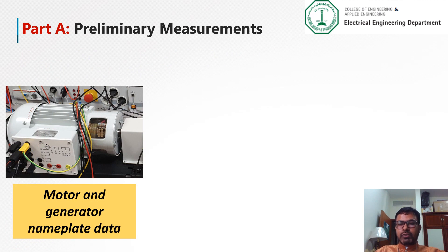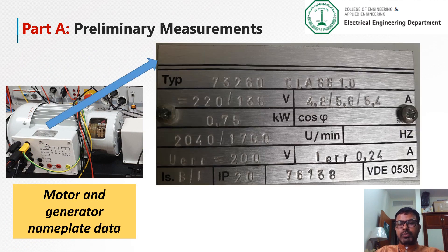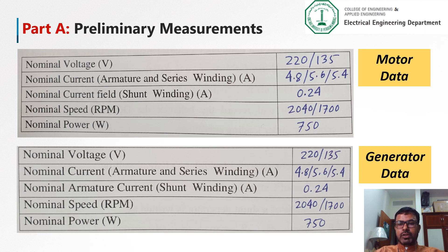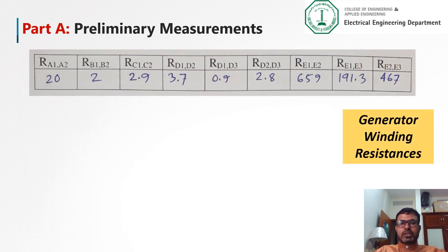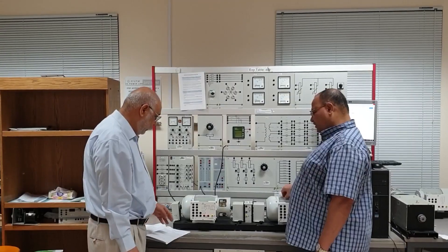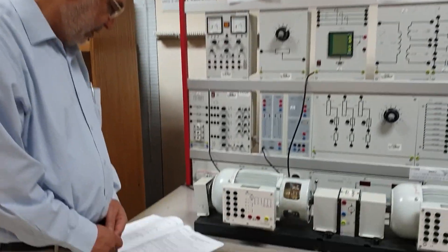We will now record the nameplate data of the multi-function machines. The first table represents motor nameplate data and the second table represents generator nameplate data. All values are the same since the machines are identical to each other. This table represents the generator winding resistances. Here is the demonstration where we have measured the winding resistances between E1 and E2 using a multimeter.